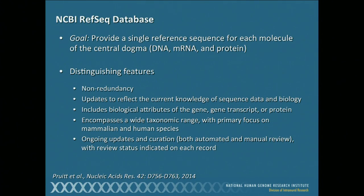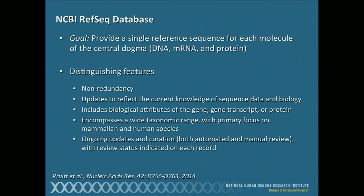What RefSeq attempts to do is to provide a single reference sequence for each molecule in the central dogma — a single DNA sequence, a single mRNA sequence, and a single protein sequence. Let's say you're interested in the deleted-for-colorectal-cancer gene in human. If you do that search, you're going to get back somewhere between 20 and 50 different sequences, and you kind of look at it all, sort of befuddled and say, which one is the right one, or at least the canonical one? This is intended to help you select what is considered to be the canonical sequence.